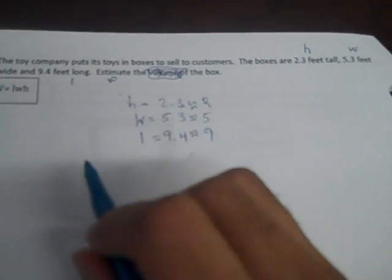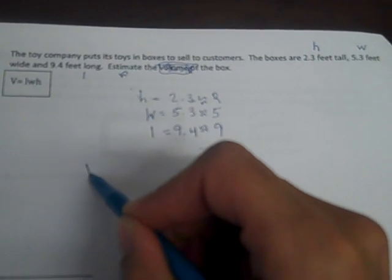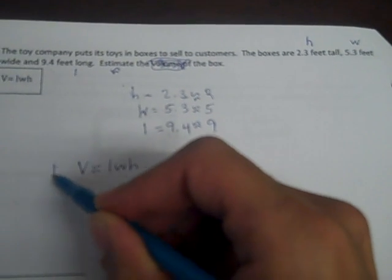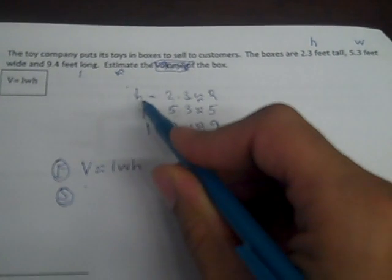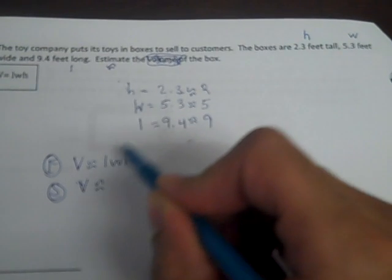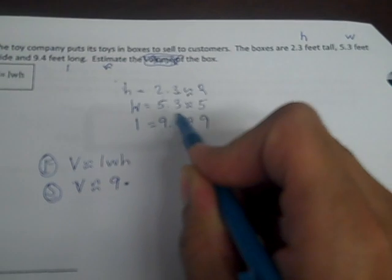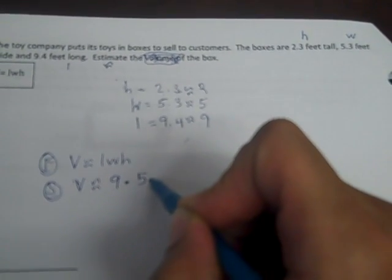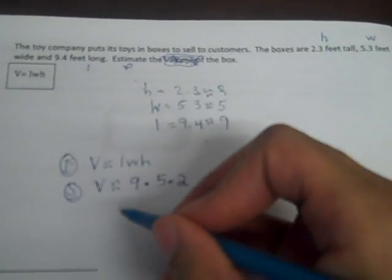Now I'm going to actually plug in all of my estimated answers into my estimated formula. Volume is about length times width times height. I wrote the formula. Now I'm going to substitute. I have not been told what V equals. So I'm going to write V is about length, I've been told is about 9. Multiply that by W, I've been told that's about 5. And height, I've been told that is about 2.